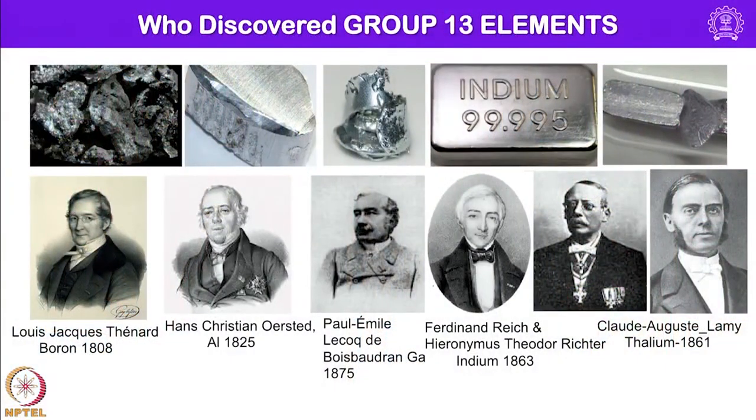Let us look into who discovered group 13 elements. Boron was discovered by Louis Jacques Thénard and then it was isolated in pure form by Humphry Davy. Aluminum was discovered in 1825 by Hans Christian Ørsted and gallium was discovered initially by Paul-Émile Lecoq de Boisbaudran in 1875. Indium was discovered by two chemists Ferdinand Reich and H.T. Richter in 1863 and the last element in the series thallium was discovered by Claude-Auguste Lamy in 1861. You can always go into Wikipedia to know more about these elements and the history of discovery and to know more about these chemists.